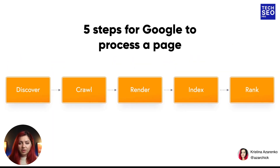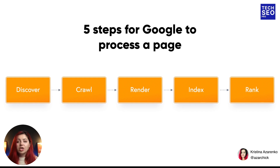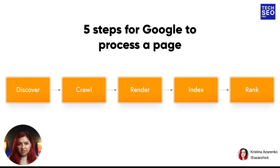In a nutshell, there are five steps for Google to process a page: it first needs to discover a page, then crawl and render the content, and then if indexing is allowed, it will index the page and store it in its collection. Then Google will rank the pages based on different ranking factors. As a technical SEO — and this is really important — you have the power to control these stages. We are going to talk more about controlling these stages in the next module, but for now you need to know that you can optimize the process.